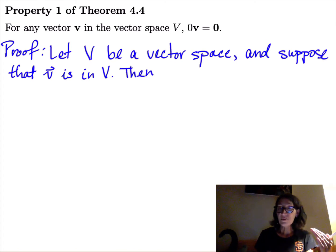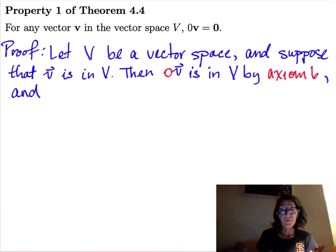All right, so because we have a vector space, we know it's closed under scalar multiplication. Since the vector v is in V, we know that the scalar 0 times the vector v is also in the vector space by axiom 6. It's closed under scalar multiplication.